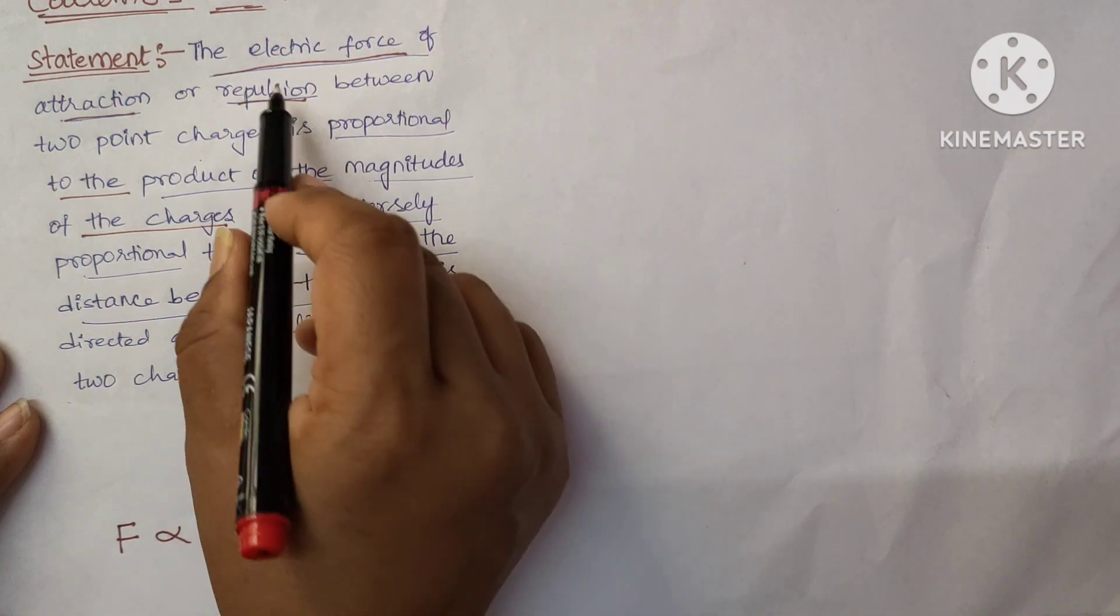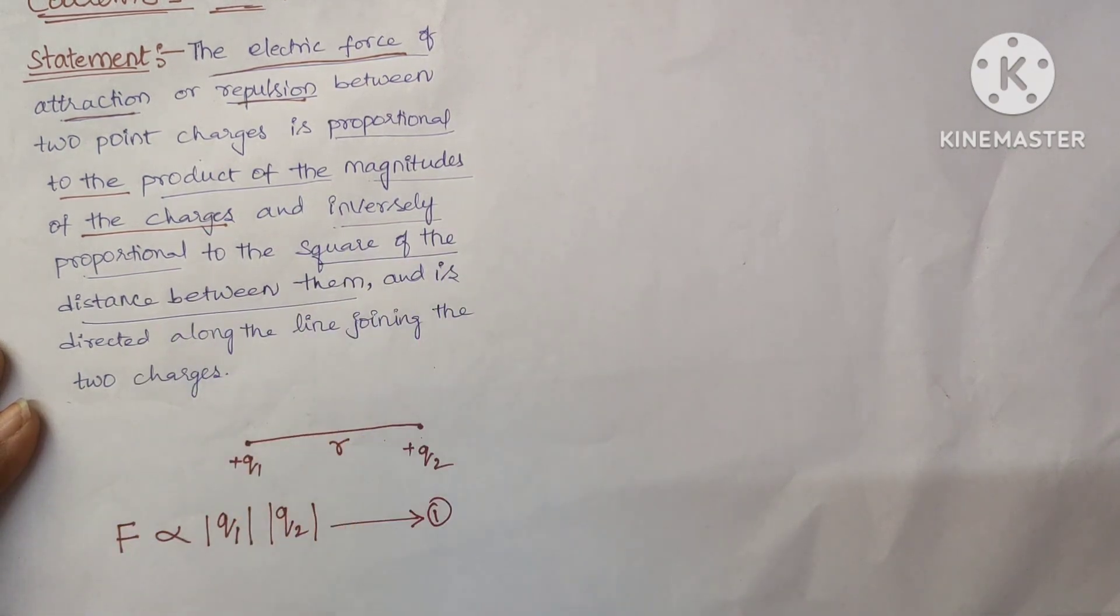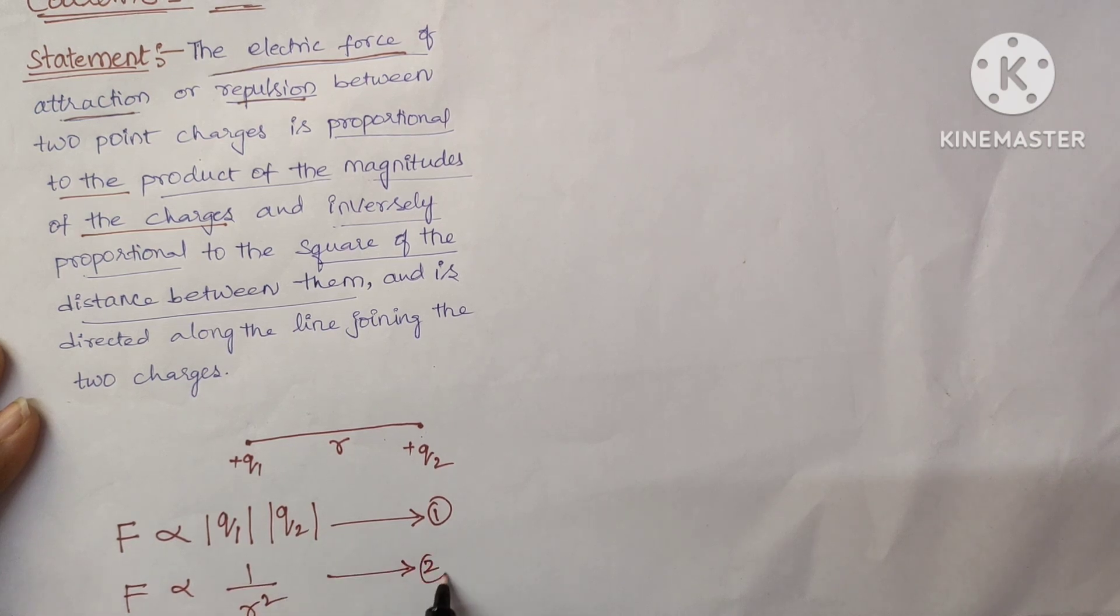And the other part is, this electric force is inversely proportional to the square of the distance between them. That means, F is directly proportional to 1 by R square. Let it be equation number 2.